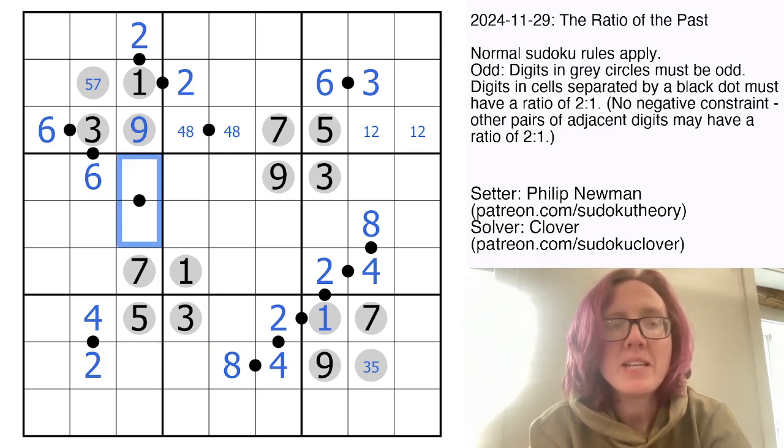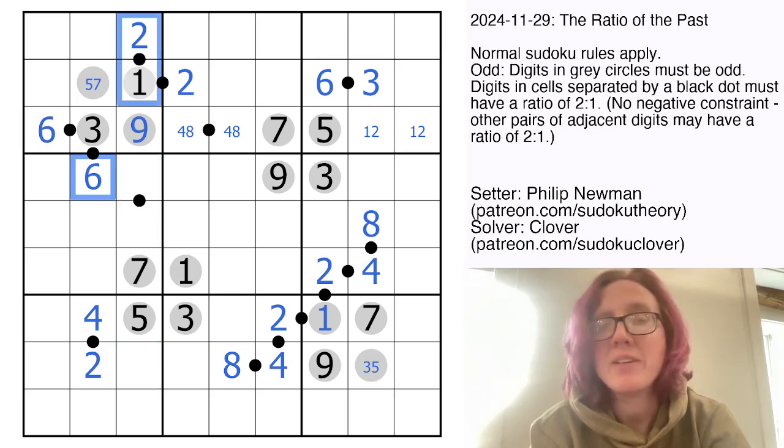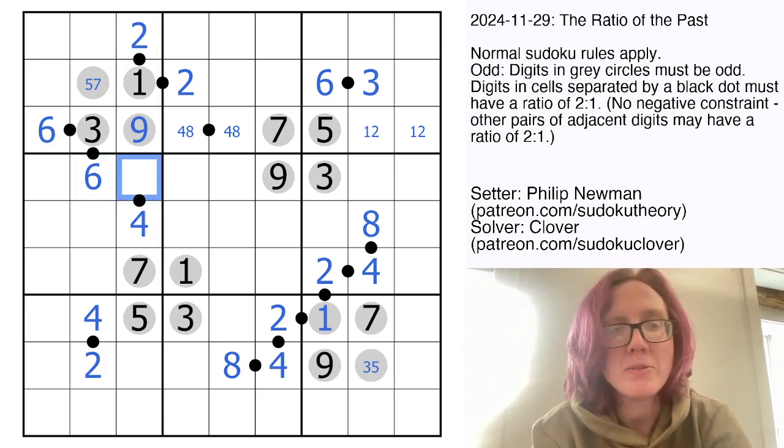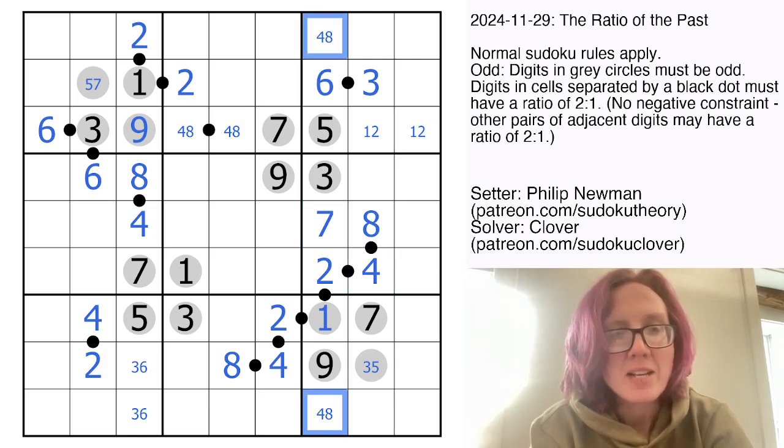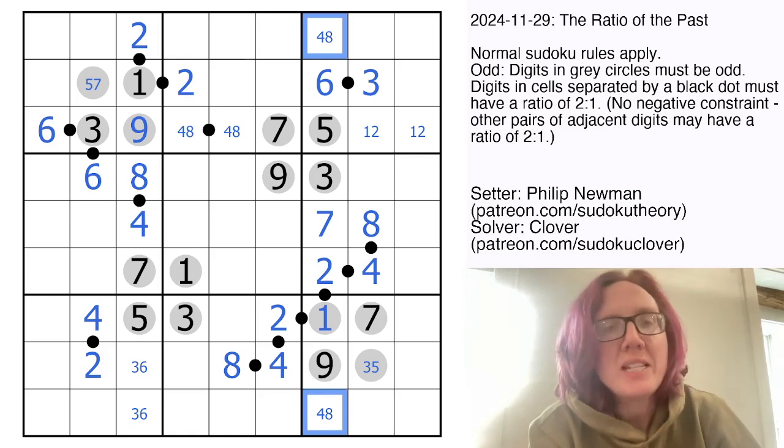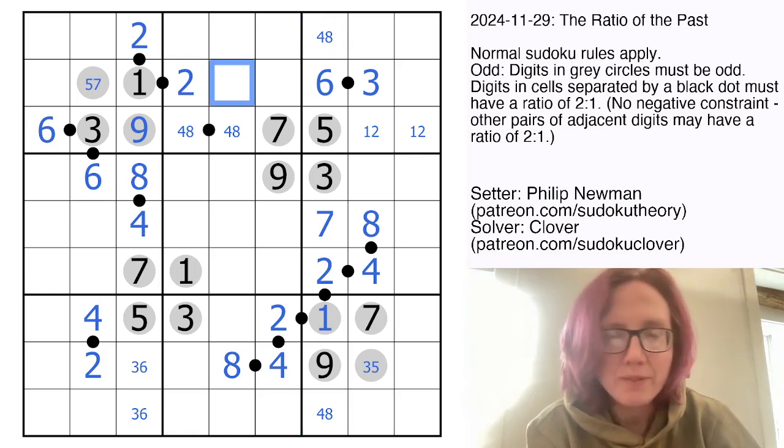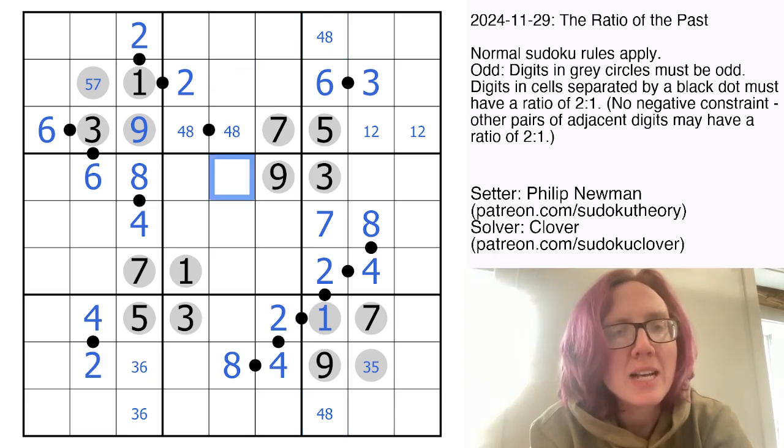This pair here can't have a 6 in it and also can't have a 1 or a 2. So this must be a 4, 8 pair, which goes in this order because of the 8 in row 5. And that means the last two cells in this column are 3 and 6. Now if we look at this column, we still need 4, 7, and 8. This can't be 4 or 8, so that's a 7. And these two are my 4 and my 8. Now I think we have at least pencil marked in all of the clue cells here. So let's go ahead and take a look at classic Sudoku.